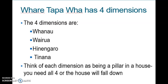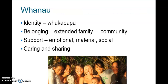The four dimensions are whānau, wairua, hinengaro, and tīnana — think of each dimension as a pillar in a house; you need all four. Whānau is about identity related to whakapapa — it provides Māori with a strong sense of identity, and we know identity is important in health, as people with a strong sense of identity have better health outcomes. Whānau also considers extended family, community, sense of belonging, and the emotional, material, and social support that comes from whānau through caring and sharing.